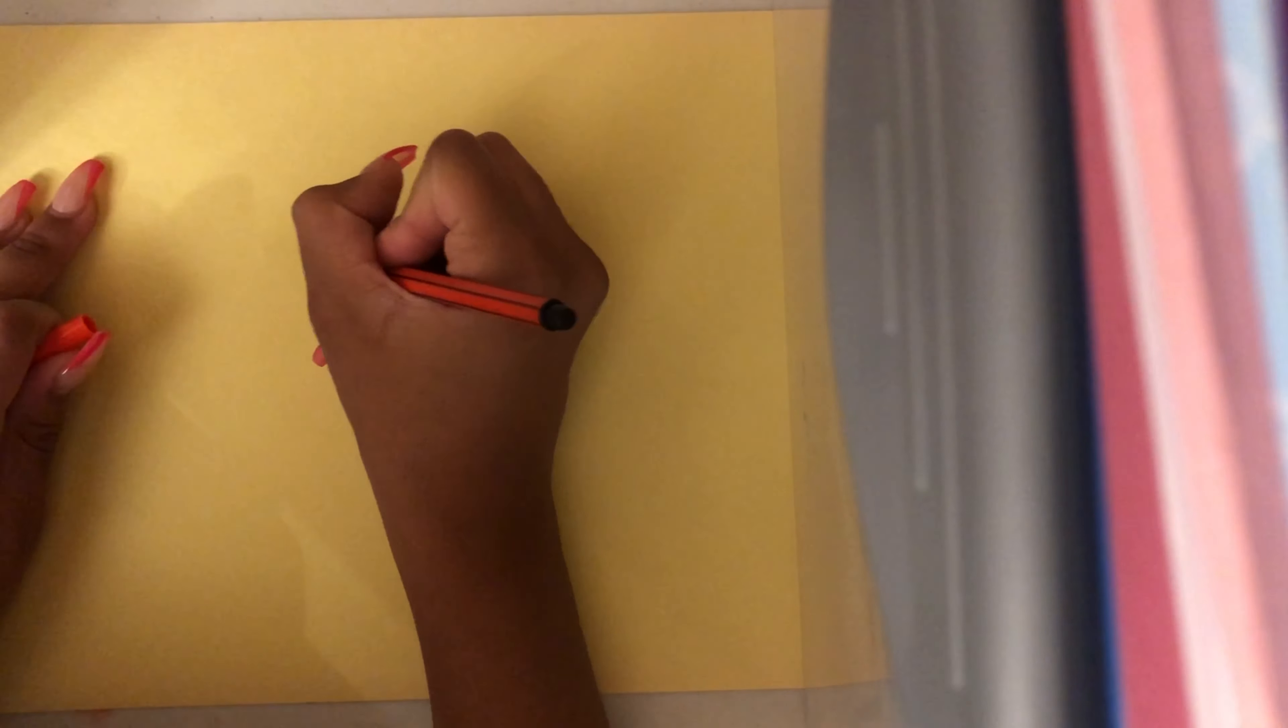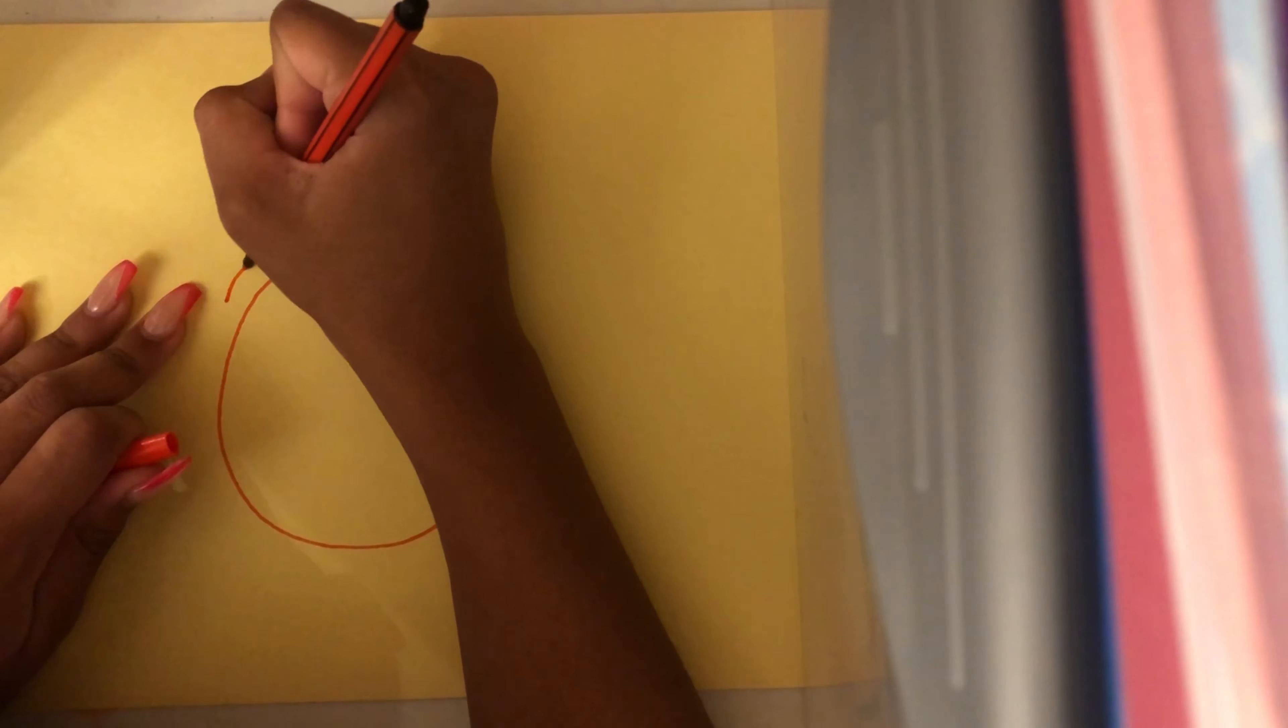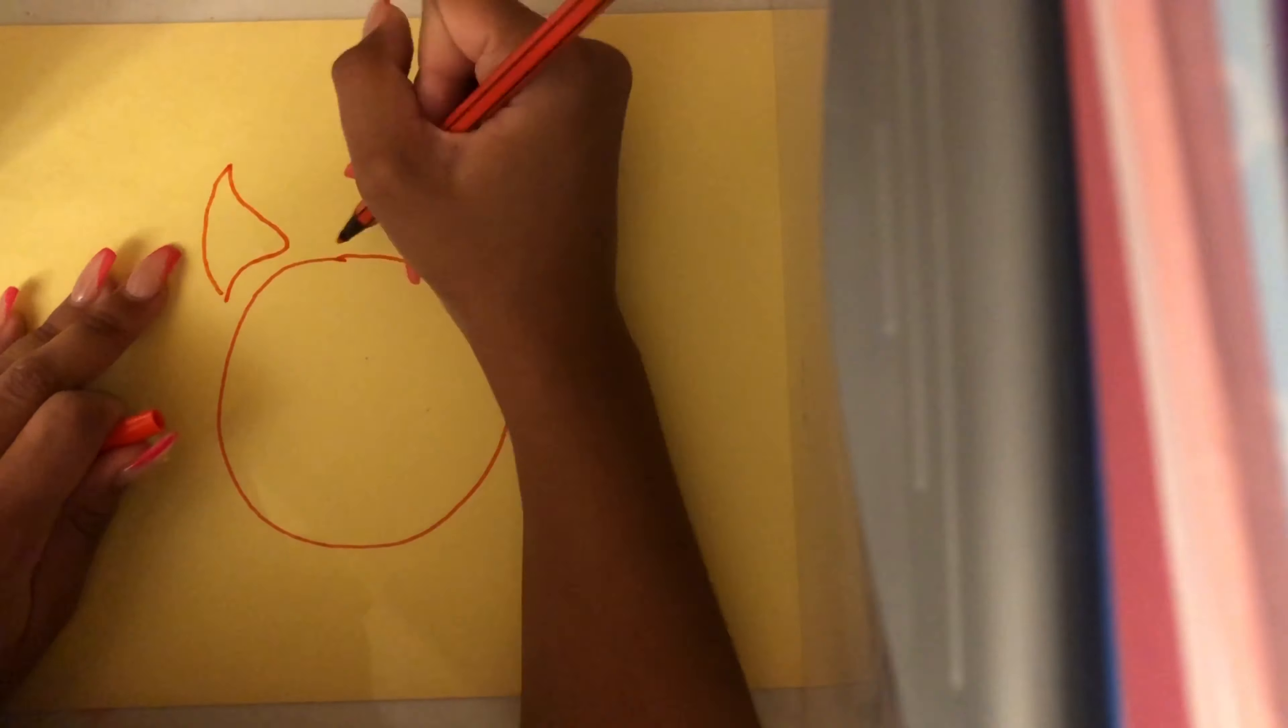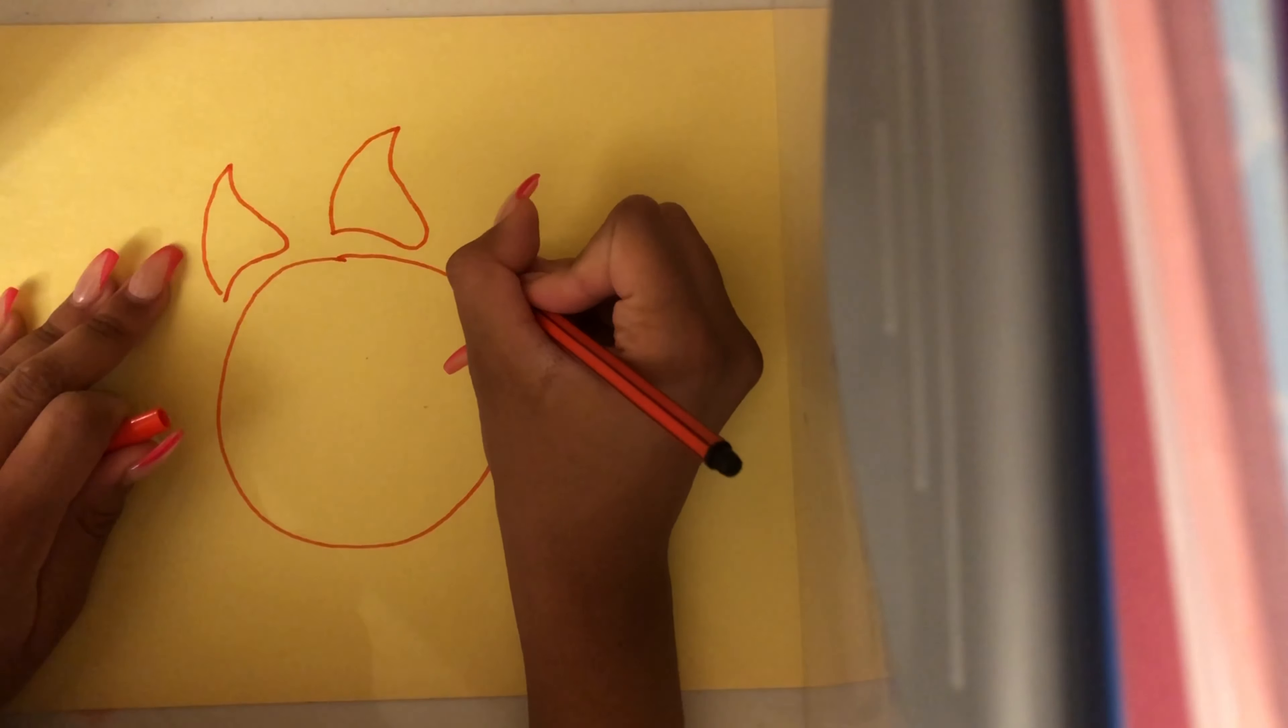Our first step is to decorate our first piece of paper. As you can see, I'm mimicking the sun which is a symbol in the Tangled movie.